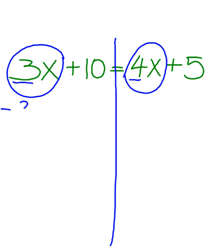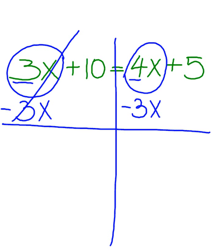It's positive 3x, so I'll subtract 3x from each side of the equation. Minus 3x, minus 3x. 3x minus 3x cancel out.